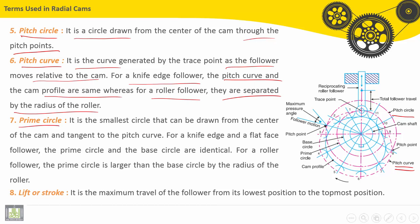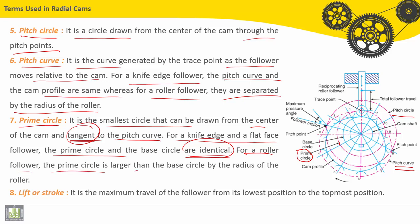Next one, prime circle. It is called the prime circle. It is here. This is the prime circle. It is the smallest circle that can be drawn from the center of the cam and tangent to the pitch curve. For a knife edge and flat face follower, the prime circle and the base circle are identical. For a roller follower, the prime circle is larger than the base circle by the radius of the roller.